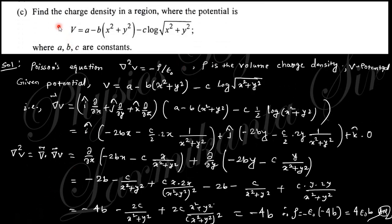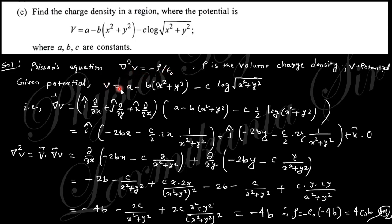Next question: find the charge density in a region where the potential V is given. To find charge density you need Poisson's equation, which is grad² V equals minus rho over epsilon naught — this was proved in the first lecture. So rho equals minus epsilon naught times grad² V. You need to evaluate grad² V.